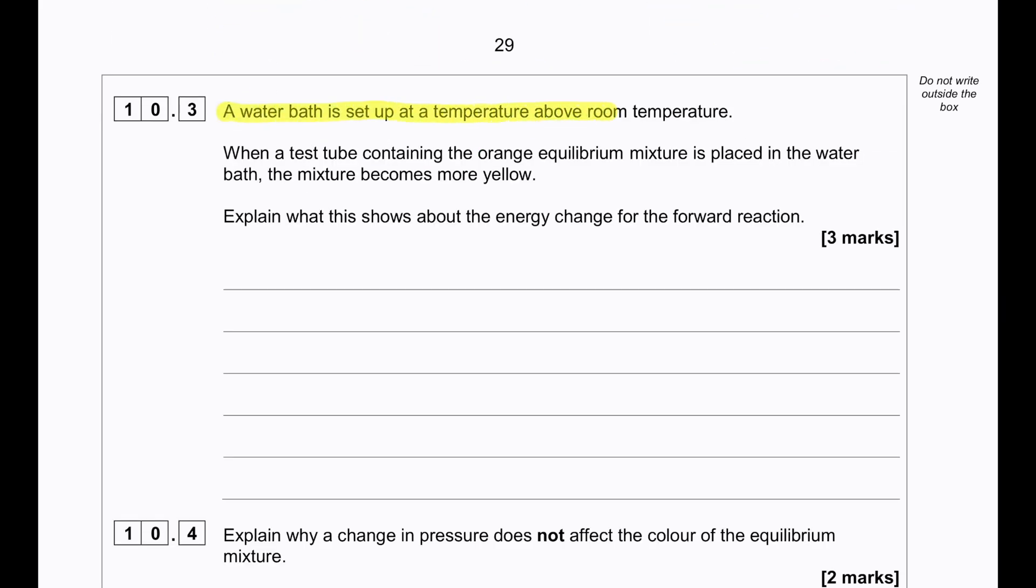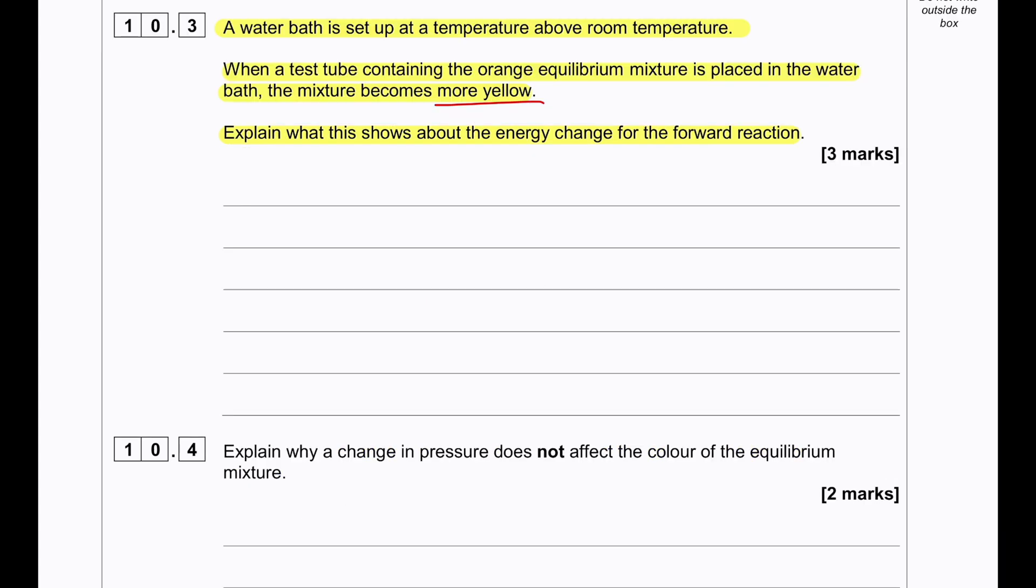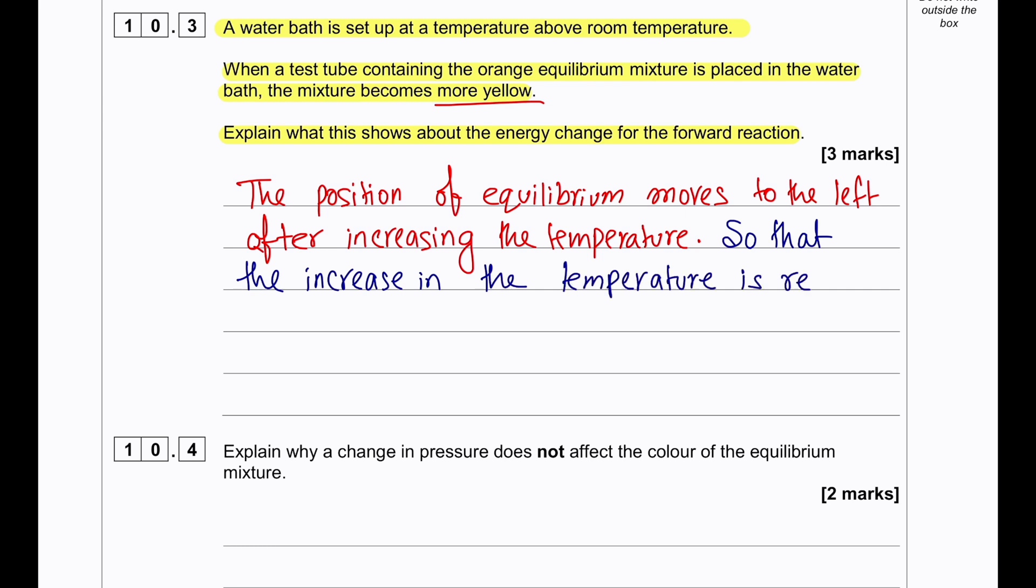A water bath is set up at temperature above room temperature. When a test tube containing orange equilibrium mixture is placed in the water bath, the mixture becomes more yellow. Explain what this shows about the energy changes for the forward reaction. So we are placing it at high temperature, and we see more yellow. So the reaction is reversing at high temperature. That means the reverse reaction is endothermic because endothermic reactions are favored by high temperature. The forward reaction is exothermic. So we will answer it in this way: The position of the equilibrium shifts to the left so that the increase in temperature is reduced by the endothermic reaction, which is the reverse reaction. And therefore, the forward reaction is definitely exothermic.